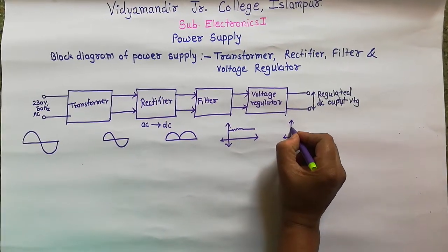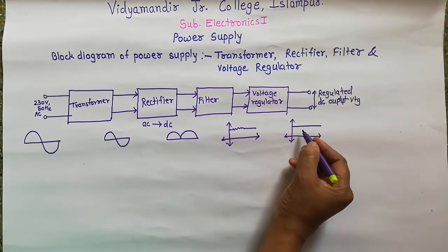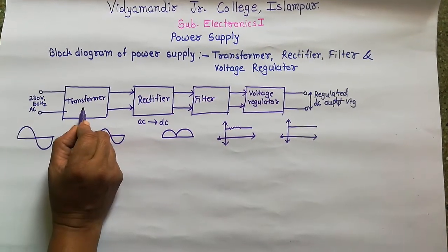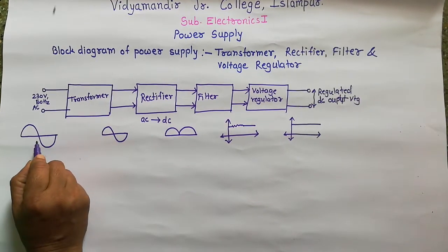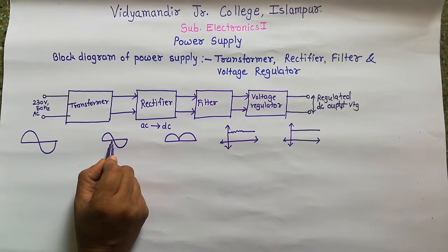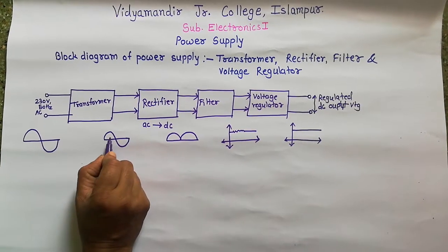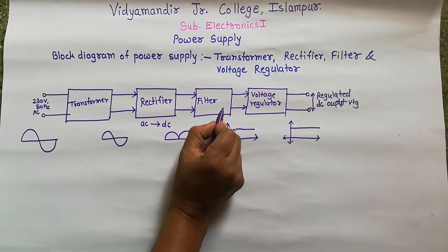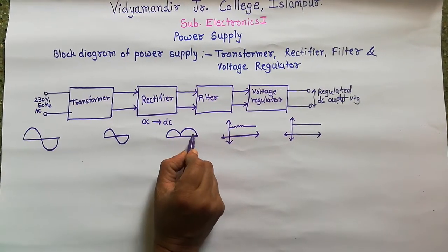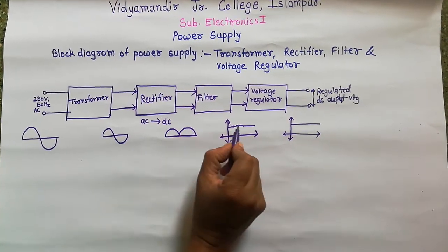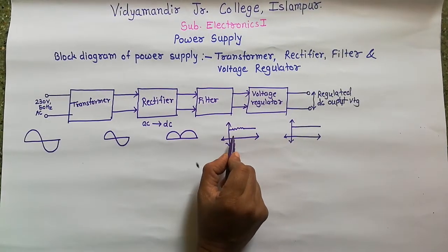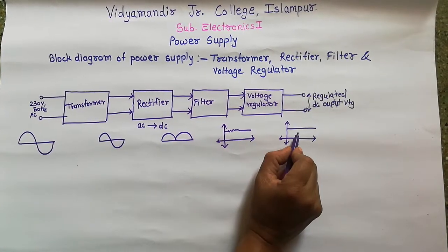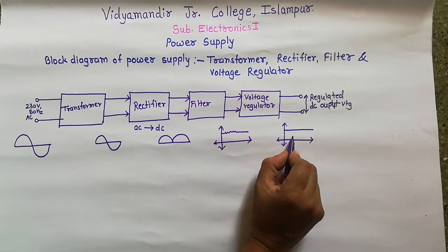Since we want a steady and constant DC output, the filter output is given to the voltage regulator. Voltage regulator circuits are used to maintain a steady and constant DC output. In summary: the transformer supplies required power from AC mains, the rectifier converts AC into DC, the filter smooths out AC variations from the rectifier output.